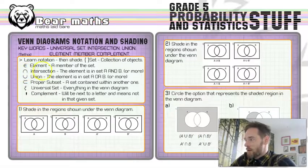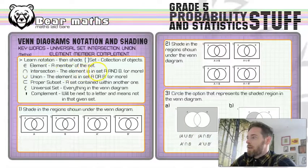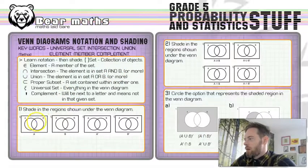This really important one, that's the intersection. It looks like an N. So, the intersection, the element is in set A and B. So, it's the crossover bit of the two circles in the Venn diagrams.